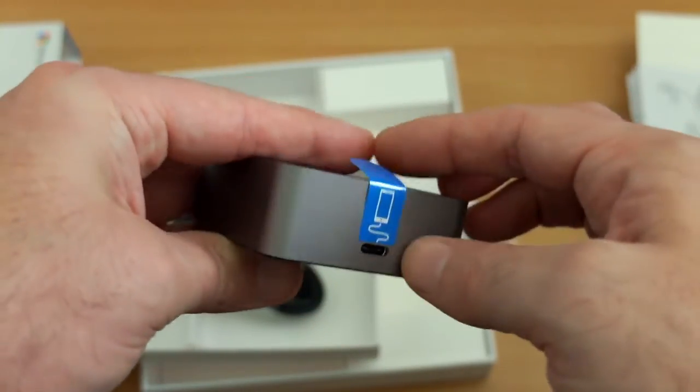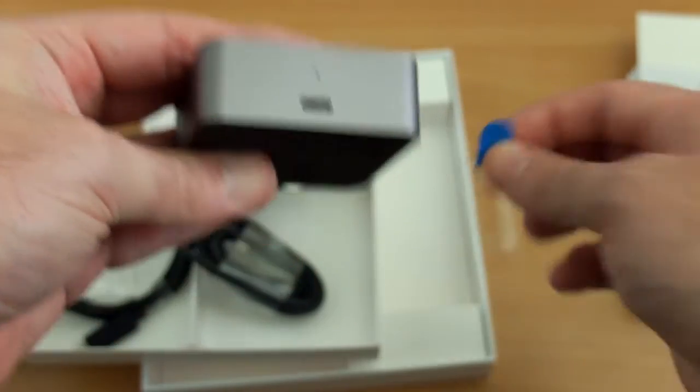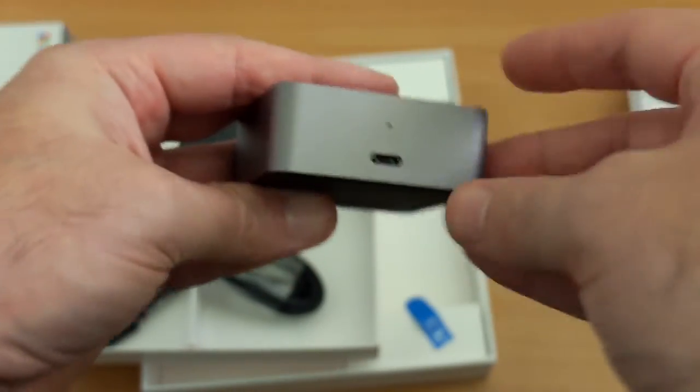The blue sticker just shows you where the type C plug connector goes for the phone and above that is a small LED.